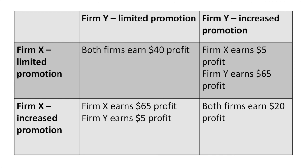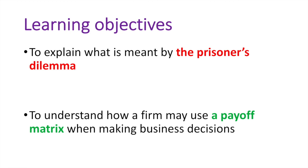You'll need to understand this payoff matrix and how it relates to game theory. Game theory looks at the actions of competitors in order to determine an optimal strategy. At this point you should be comfortable explaining what the prisoner's dilemma is and how it is related to the concept of a payoff matrix. Understanding how the payoff matrix can inform business decisions will be helpful when you conduct your analysis of oligopoly markets. If you have any questions or comments, leave them below or email me at enhancetuition@gmail.com.